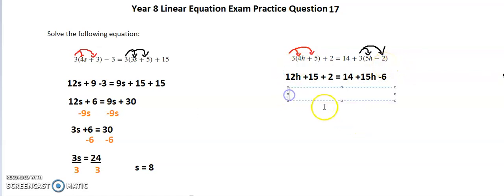Now we need to simplify by grouping everything together. On my first side I've got 12h, but I've got 15 plus 2 is 17. Same on my second side, I've got 15h, but I've got 14 take away 6 equals positive 8.